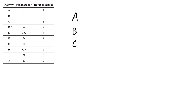Moving on to the next activity, activity D depends on A, so we just draw an arrow going from activity A to activity D. When we look at activity E, it depends on B and C, so B and C both have to lead into this one — we draw two arrows going from B and C into E. Activity F depends only on D, so we have one single arrow going from activity D to activity F.